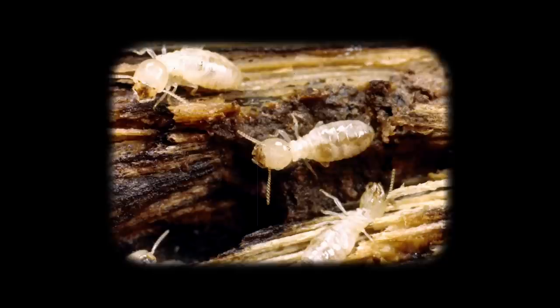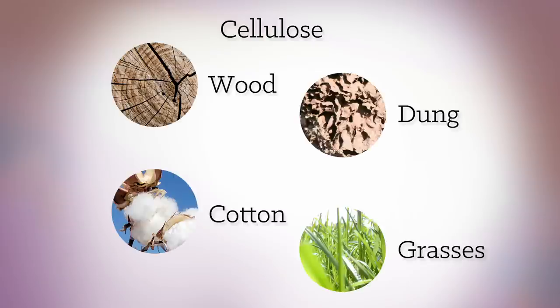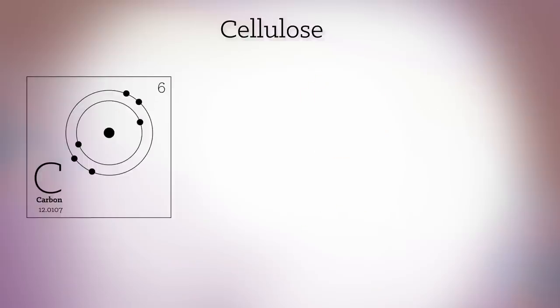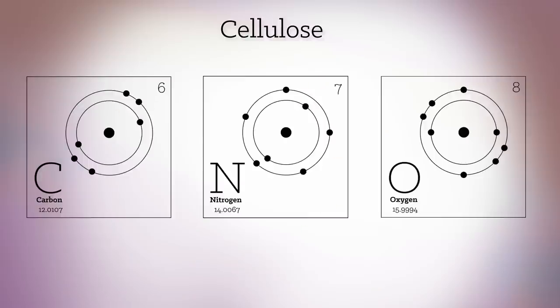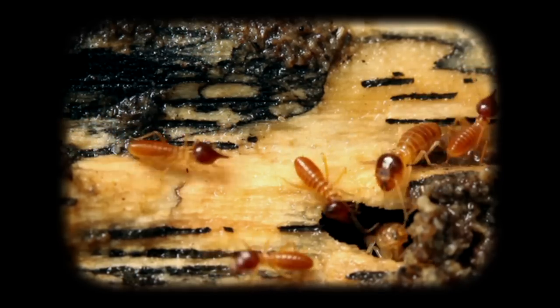Some people will only think of termites as being destructive, doing damage to their house. But this is not true. Only 10% of these species in the world are destructive. The remaining are very useful — they play a very important role in that they convert cellulose: that's wood, cotton, dung, grasses, and recycle it back into the elements — carbon, nitrogen, oxygen. Very few organisms can recycle cellulose. In that sense, they play a very important role in the ecosystem. Without termites, the trees will still be standing.